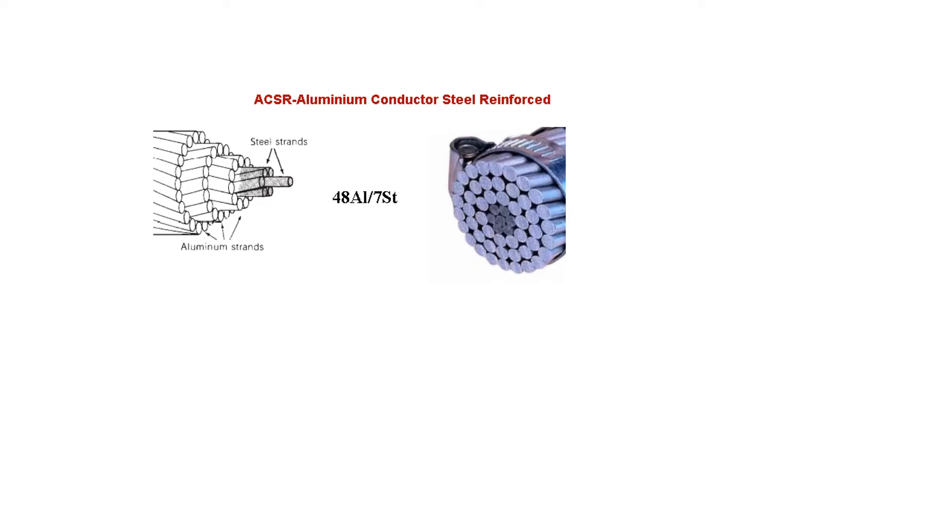Now the Aluminium Conductor Steel Reinforced or ACSR as it is called looks something like this. You can see these black strands, they are the steel strands to give strength to the whole cable, and the outer whitish looking ones are the Aluminium Conductors.